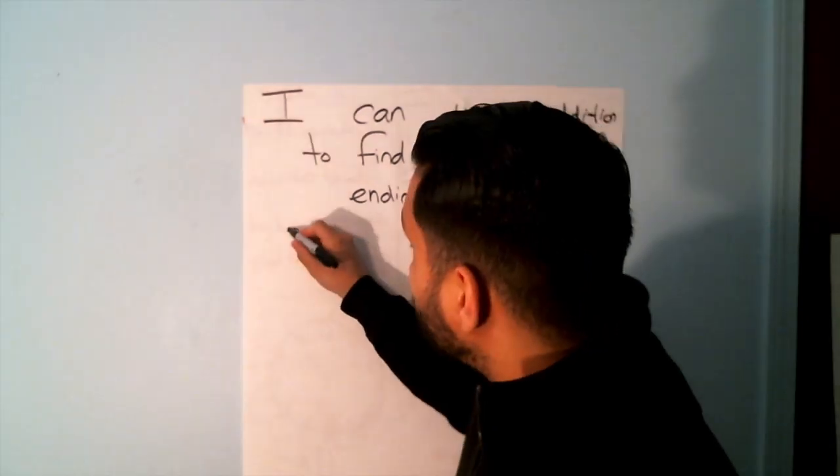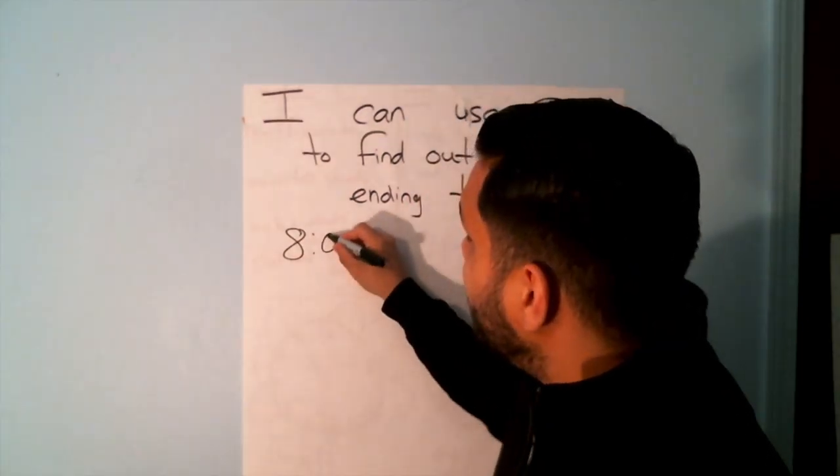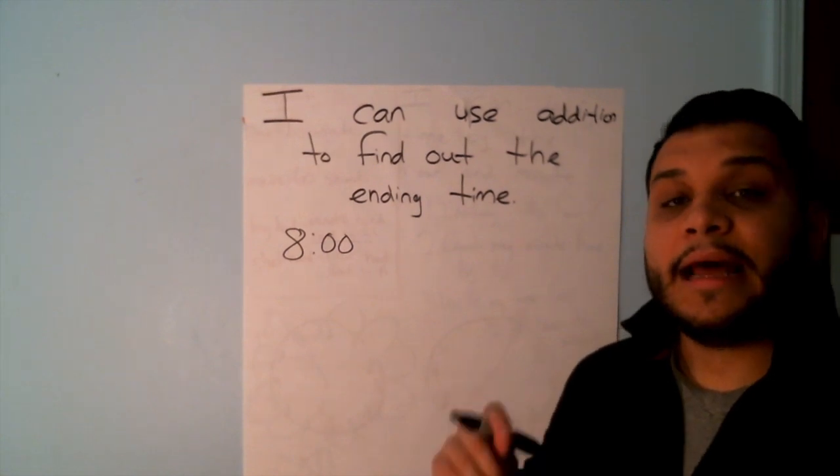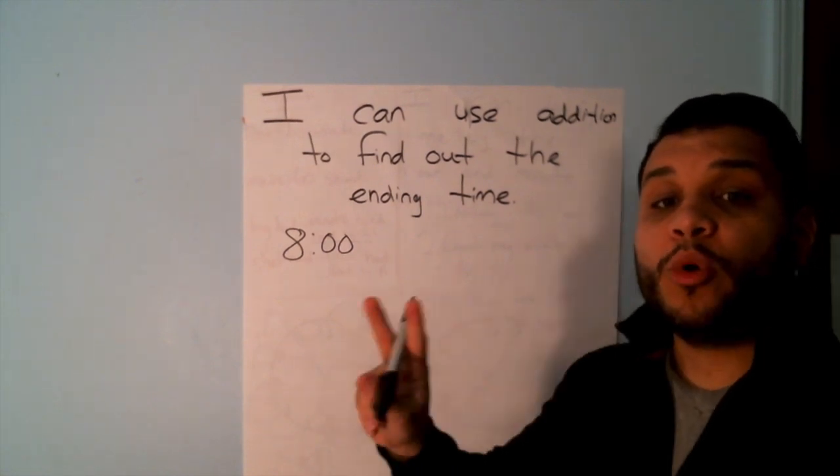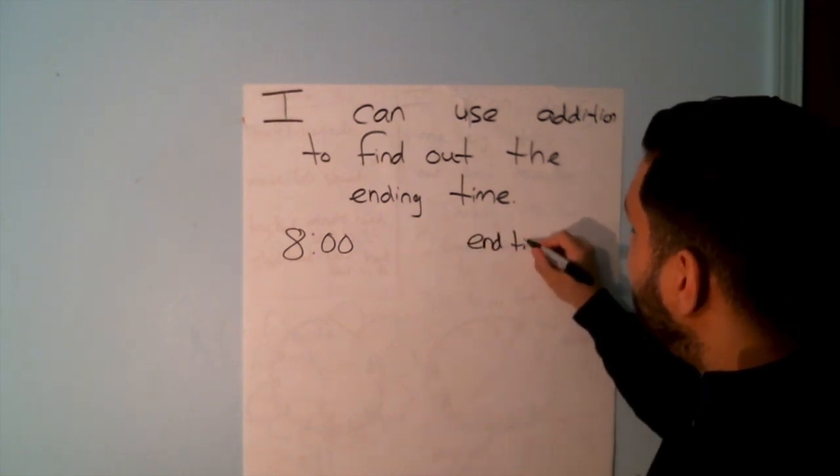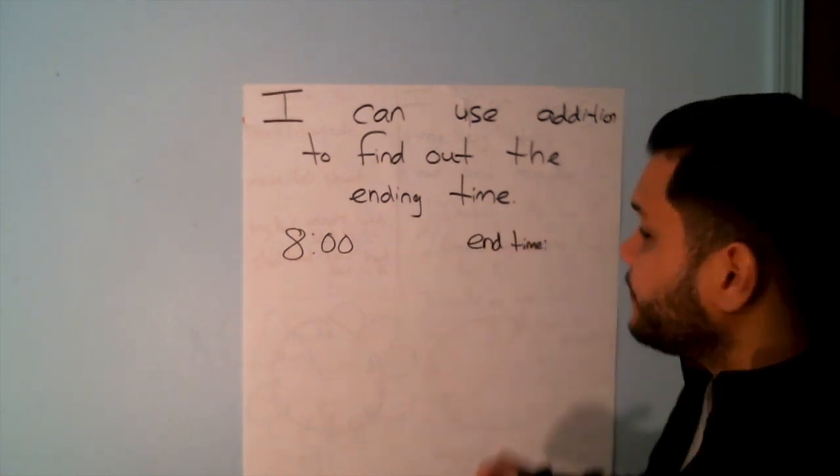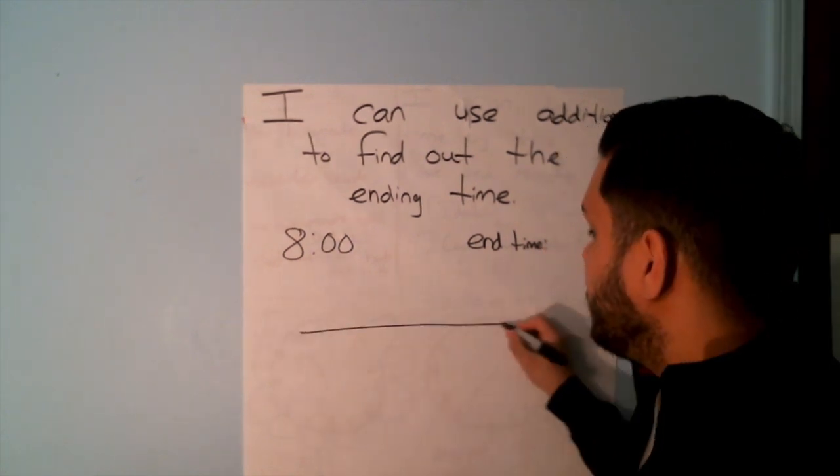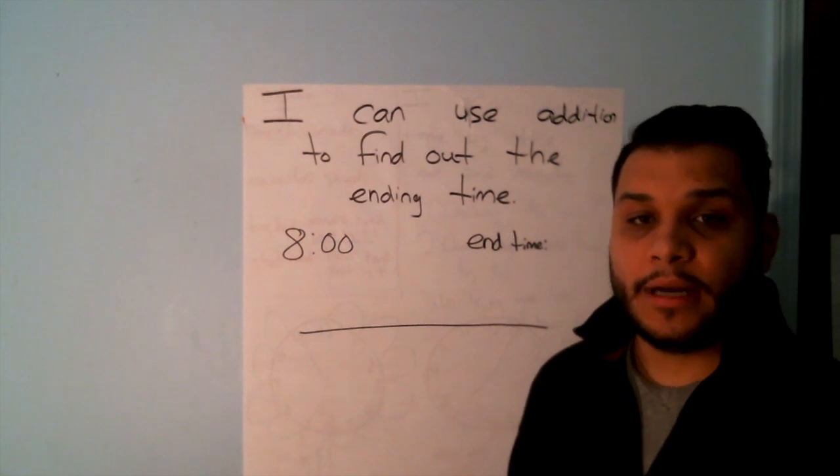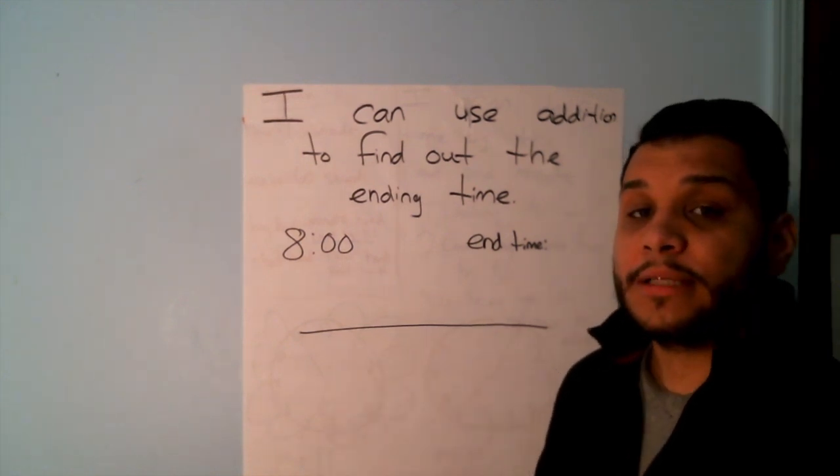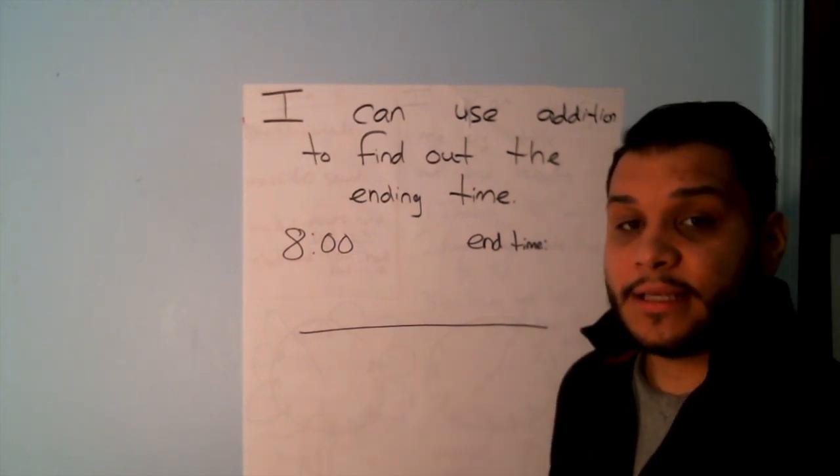So if I was to have a start time of 8 o'clock, and I said that two more hours passed, what will be my end time? Well, one of the ways that I can find this out is by drawing a number line. Earlier this week, we used a number line to help us find out our time. We can use this again.